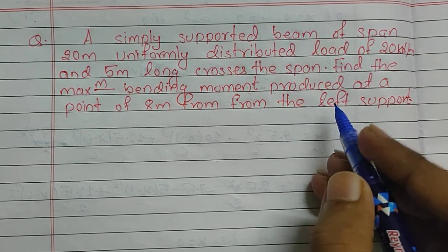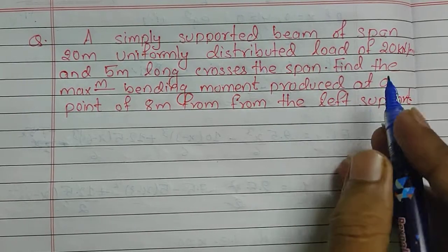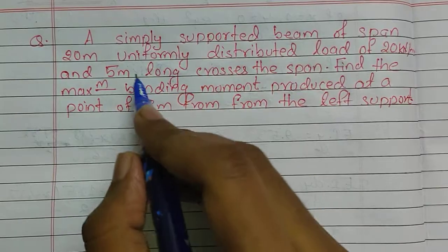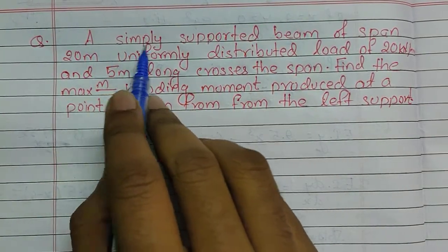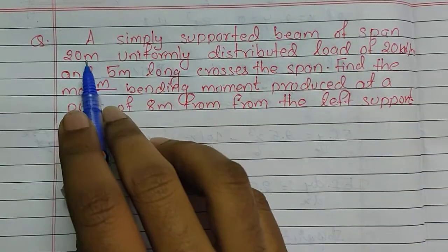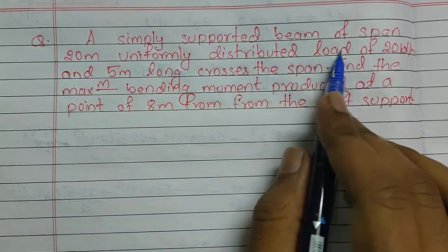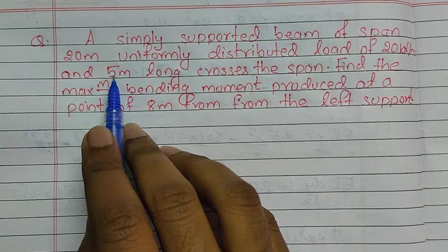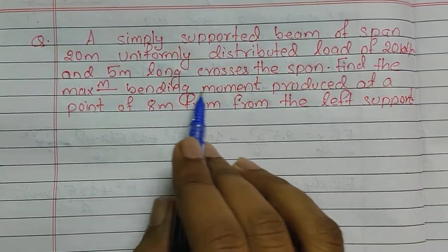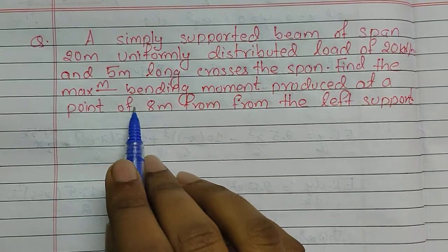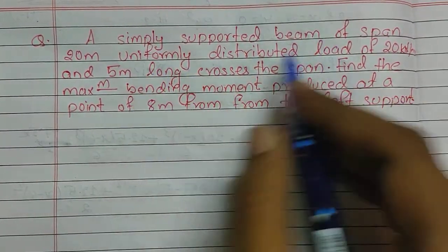The question is: a simply supported beam of span 20 meters, a uniformly distributed load of 20 kN per meter and 5 meters long crosses the span. Find the maximum bending moment produced at a point 8 meters from the left support.